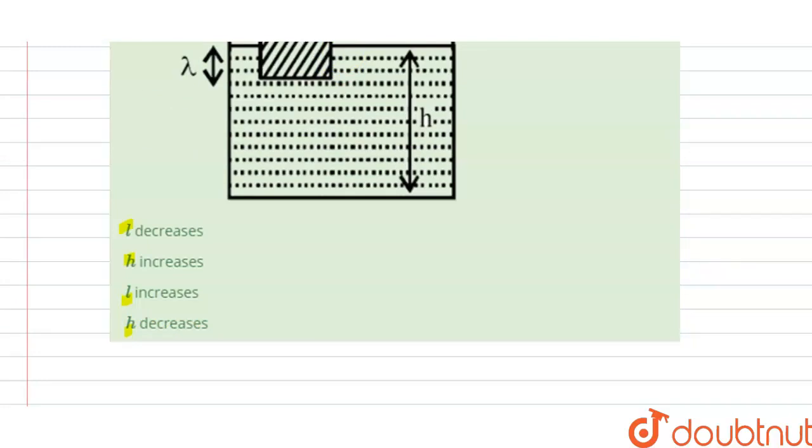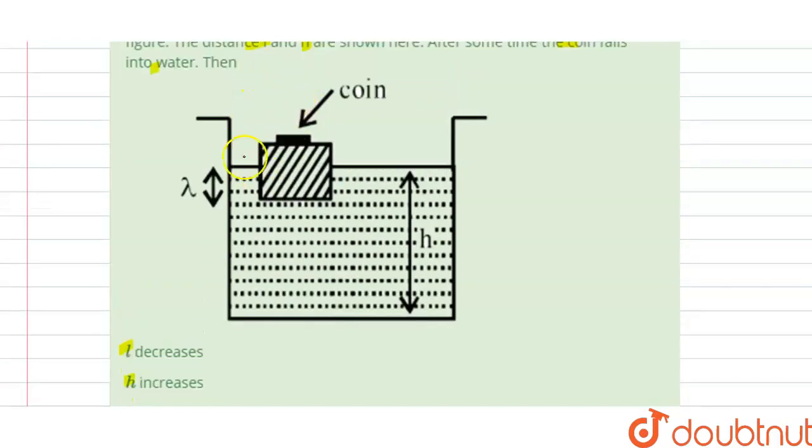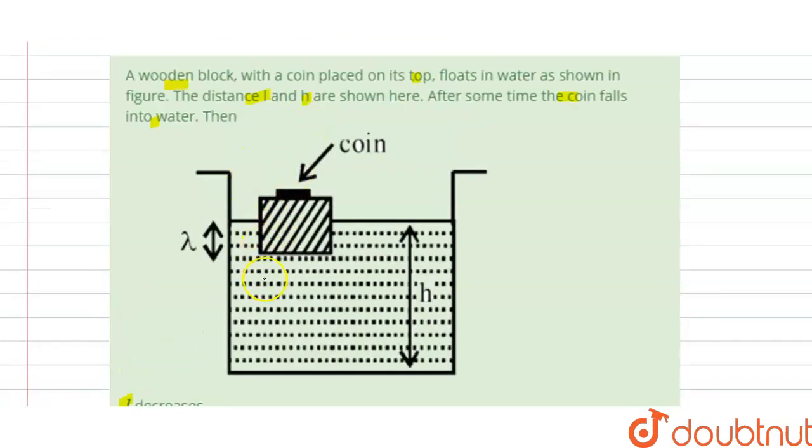Options a, b, c, d are given here, so we have to find the correct option. The solution of this question is: initially we have the coin and this wooden block, so we have mg force acting in this direction - mg, that is the weight of the wooden block due to this mass and acceleration due to